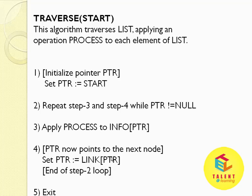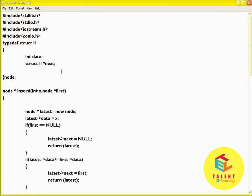Now let us see a C++ code of the insert algorithm of a singly linked list, which inserts a node according to sorting order. For defining a node, we use a typedef: typedef struct ll, integer data, struct ll star next, and node semicolon.